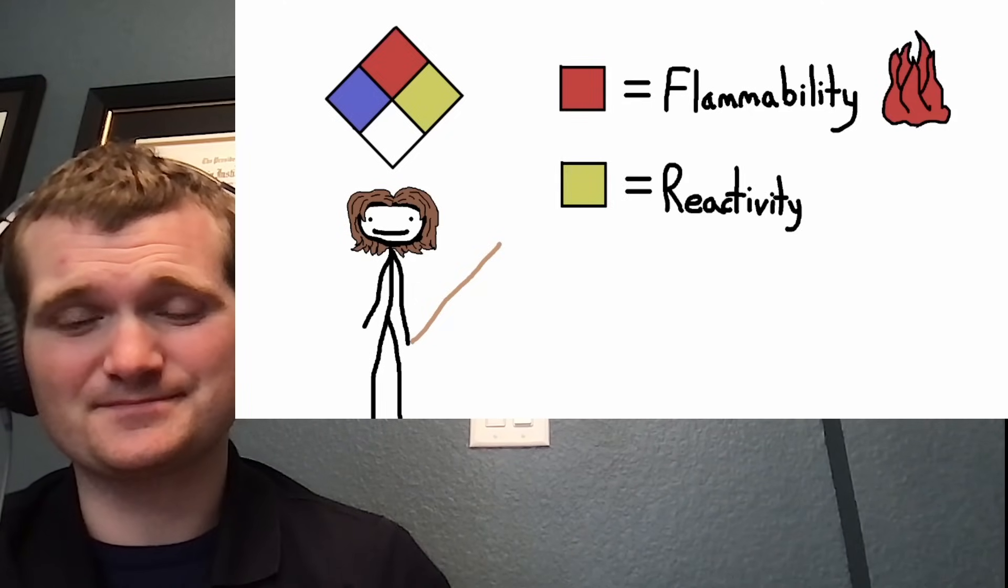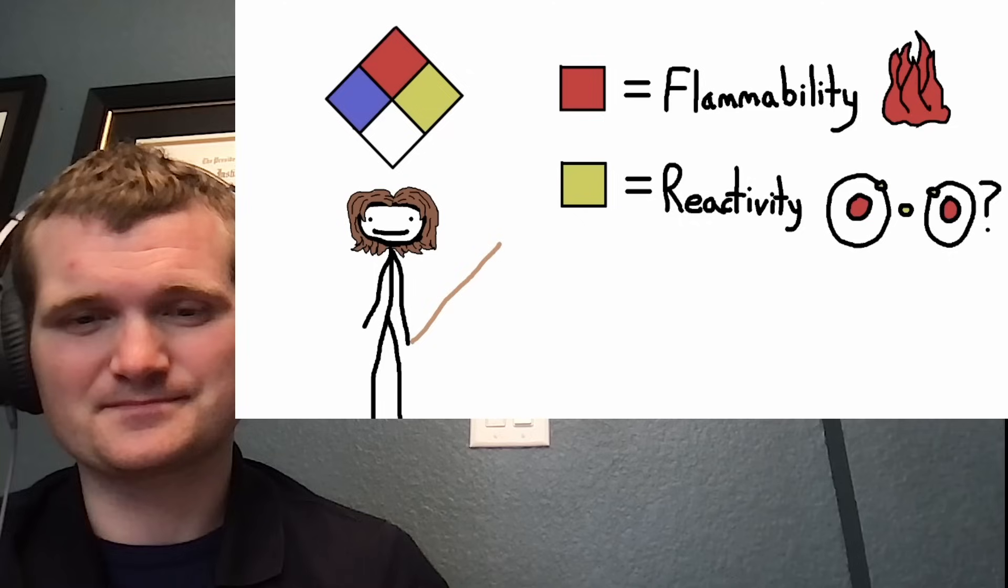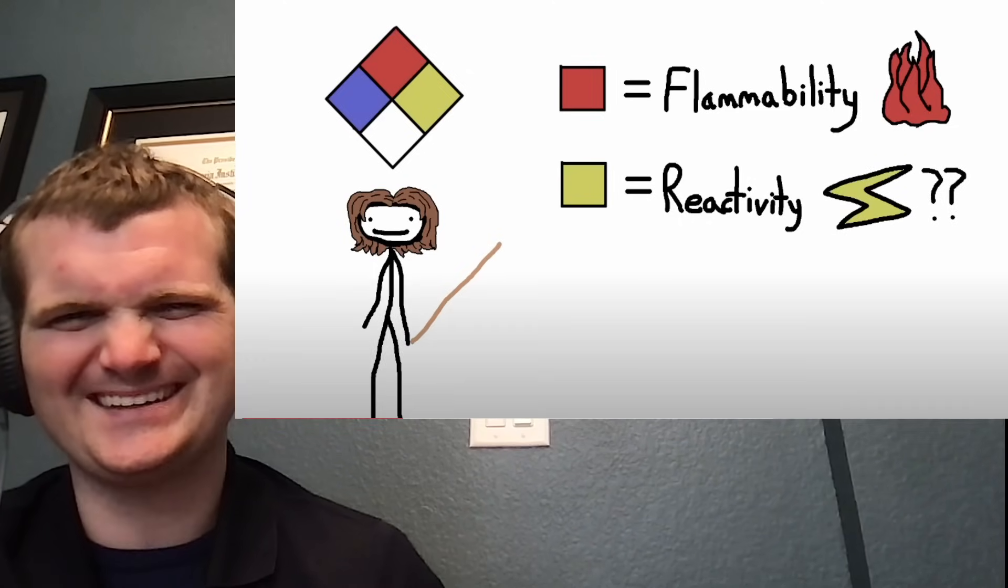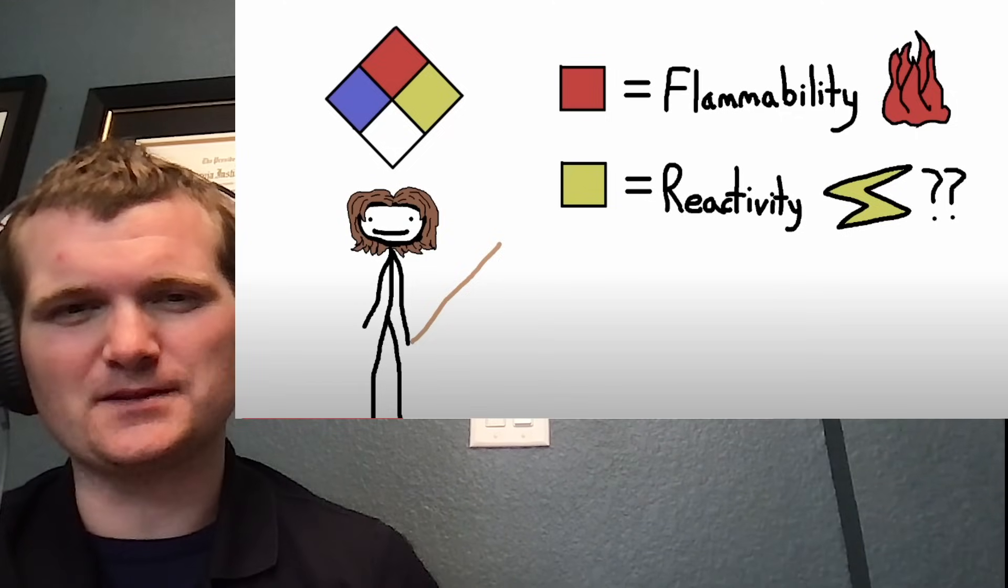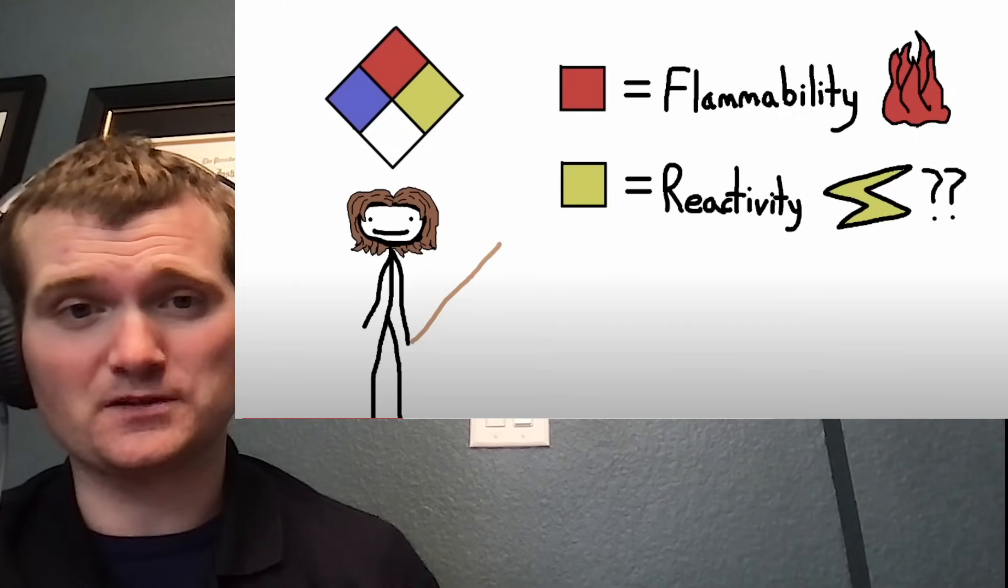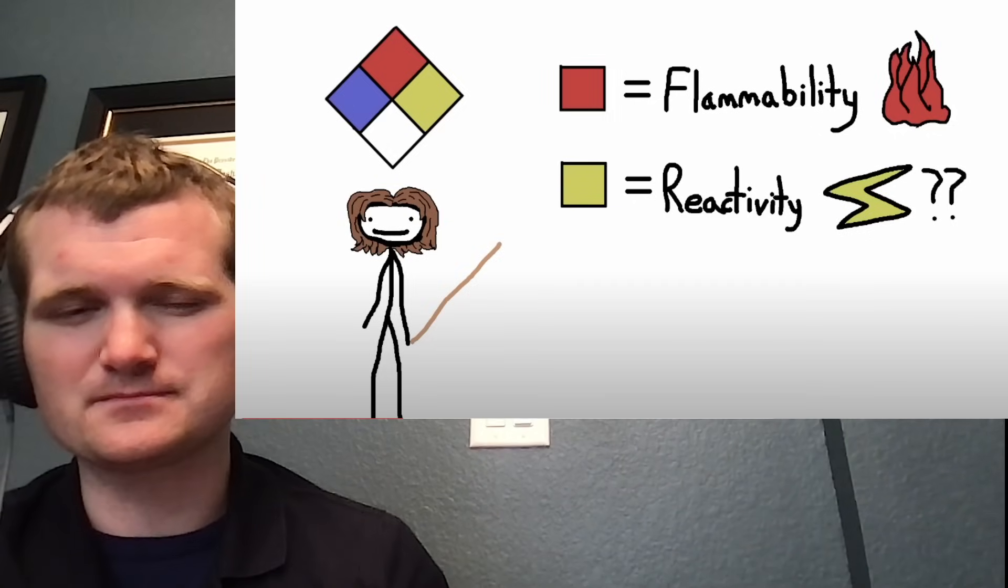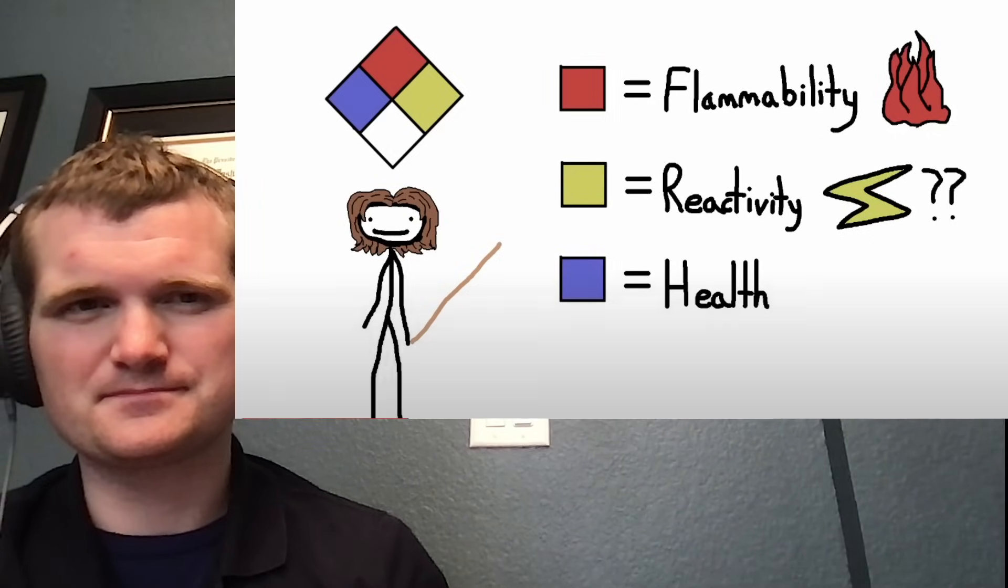Yellow is for chemical reactivity, I guess because chemical reactions involve swapping electrons and electricity is yellow. So reactivity - this is different from reactivity associated with nuclear reactors - strictly chemical stuff. Blue is for health hazards because fuck you.